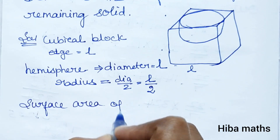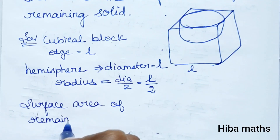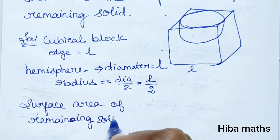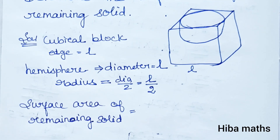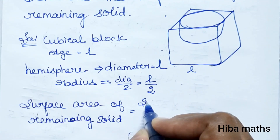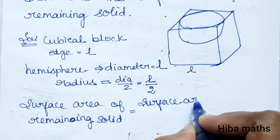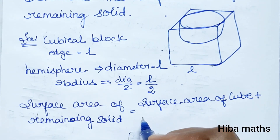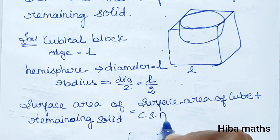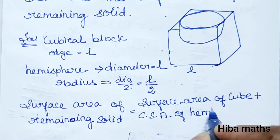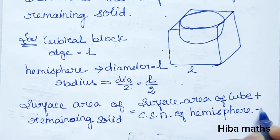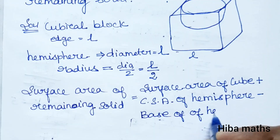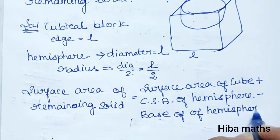Surface area of the remaining solid is calculated by adding and subtracting values: surface area of cube plus CSA of hemisphere, minus the base area of the hemisphere — because the base circle is no longer an exposed surface.